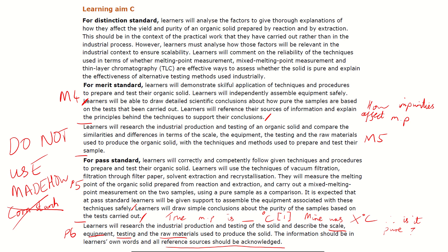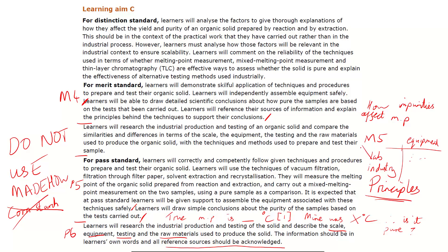Then M5 is a comparison between the industrial techniques and what you've done in the lab. What I would do is have a table with lab and industry columns, with something like equipment being used and a brief statement for each. So in the lab you're using things like the Buchner flask — check what they use in industry. Then you need to explain the principles behind what's going on: what the Buchner flask is actually doing versus what the machinery used in industry is actually doing.